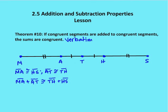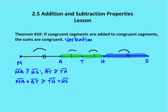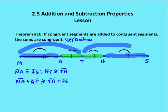Theorem number 10 says if congruent segments are added to congruent segments, then their sums are congruent. So if I have segment AT, which is congruent to segment TH, and I add segment AT to MA, and segment TH to HS, and I know that segment MA and segment HS are also congruent, then I can conclude that segment MT is congruent to segment TS.